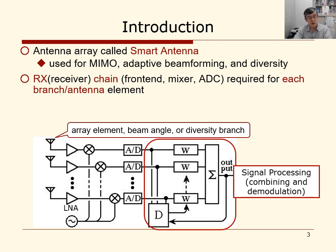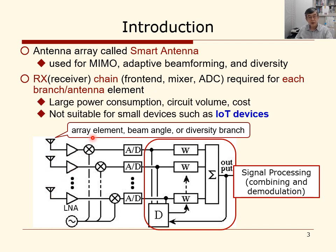Usually for this kind of smart antenna, you need RF chains required for each antenna, each diversity branch, or antenna element. The AD converters, digital signal processing, and RF front end are required for each branch or array element. So the large power consumption and circuit volume cost is a problem. And especially it is not suitable for small portable devices, such as IoT devices or sensors.